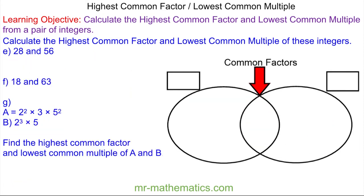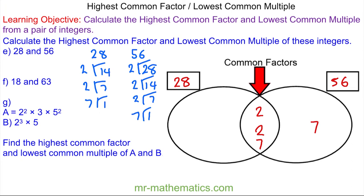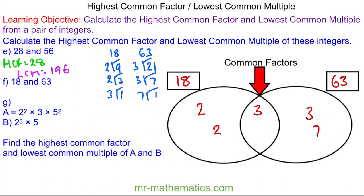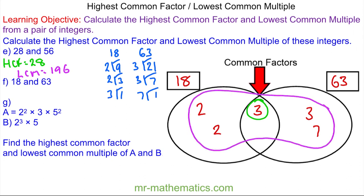Try to work out the highest common factor and lowest common multiple of 28 and 56, and then 18 and 63 — pause the video and resume when you're ready. For 28 and 56, the highest common factor from the Venn diagram overlap is 2 times 2 times 7, which is 28, and the lowest common multiple is 28 times 7, which is 196. For 18 and 63, the highest common factor is 9, and the lowest common multiple is 252.